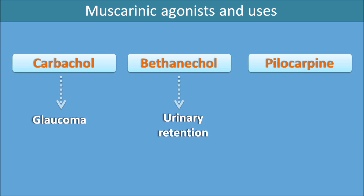Pilocarpine is one of the best drugs used in the treatment of glaucoma. Importantly, it can be used in the emergency treatment of glaucoma and is one of the drugs that can be used in both open-angle as well as closed-angle glaucoma. Pilocarpine is a natural substance acting as a muscarinic agonist.